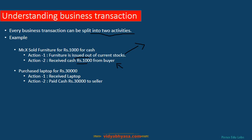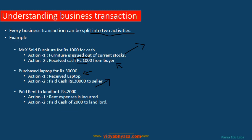Another example: purchased laptop for rupees 30,000. The receiving benefit is the laptop is received, and the giving benefit is cash going out worth rupees 30,000. Another example: paid rent to landlord for rupees 2,000. Here cash is going out, which is a giving benefit, and we utilize the premises, which is the receiving benefit. Every business transaction will be divided into two actions.